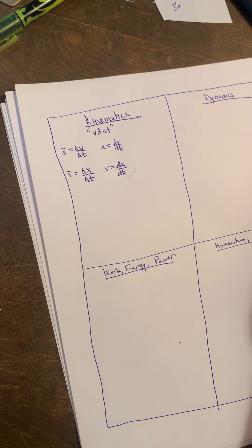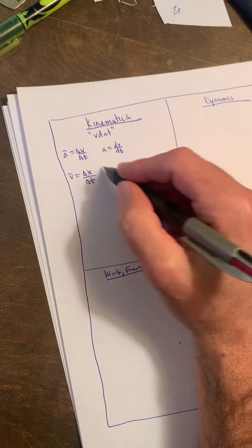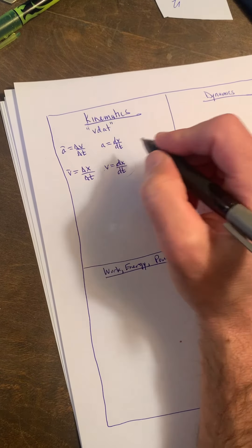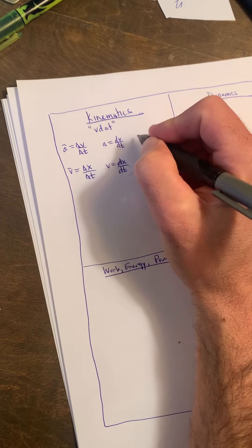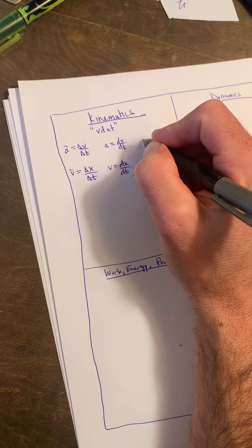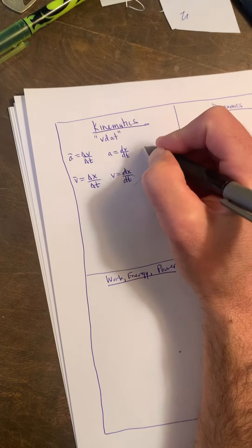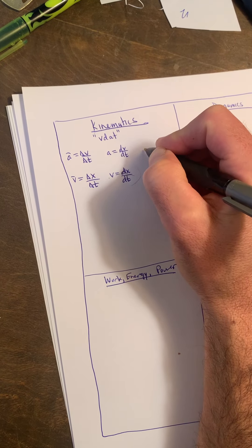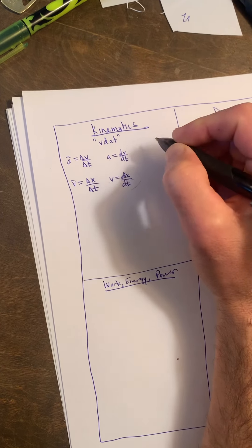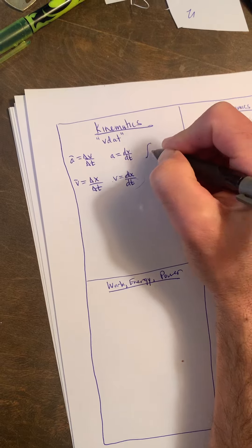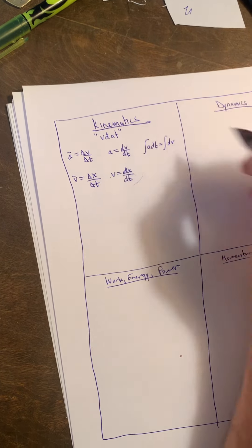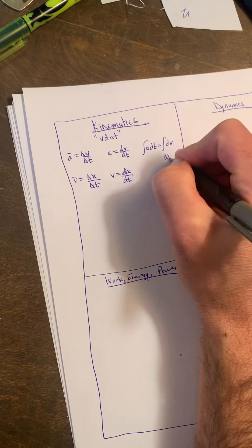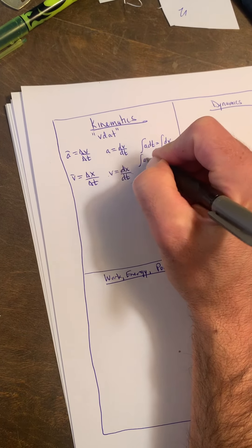You also can do integrals, so if you rearrange this one right here and rearrange this one right here also, it kind of works the other way around. If we do an integral, bring this dt up to the a, you have your integral of your dv on the other side. Basically, this is your Δv is the integral of a dt.